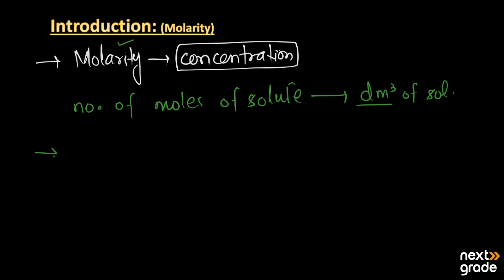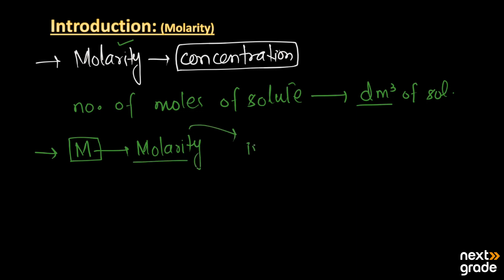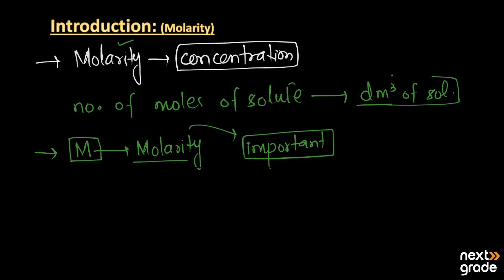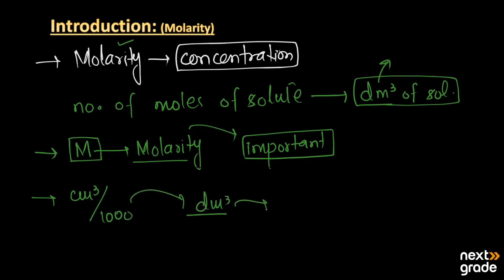Molarity is denoted by the capital M. This unit is very important for all chemical calculations needed to prepare different kinds of solutions. The unit we use is decimeter cube (dm³). If the volume is in centimeter cube, we can convert it to dm³ by dividing by one thousand.